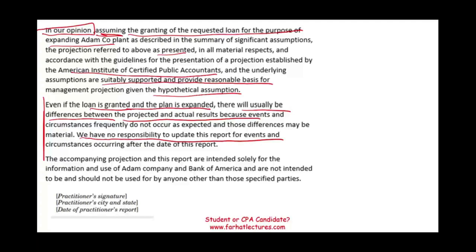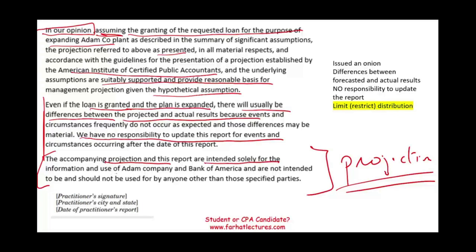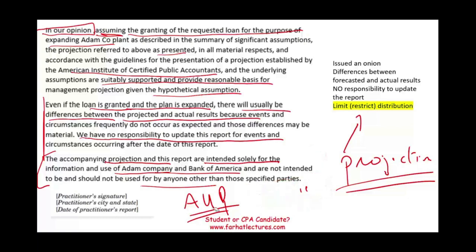We're going to add one more paragraph because when dealing with a projection, it involves hypothetical assumptions, which are very limited to the people using it. Therefore, the accompanying projection in this report is intended solely for the information and use of Adam Company and Bank of America and is not intended to be used by anyone else. We restricted the report because this is a projection using hypothetical assumptions. The general public doesn't understand hypothetical assumptions, so we have to limit the report — just like with agreed upon procedures, which is also restricted to the specific parties involved.